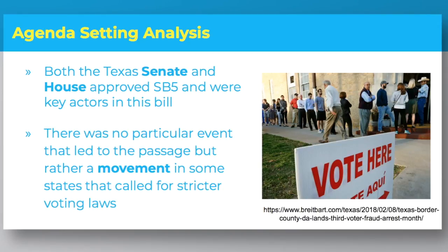Both the Texas Senate and the House approved SB 5, a voter ID overhaul of an original bill passed in 2011. The original bill, SB 14, had many opponents in court and needed to be revised. The updated bill, SB 5, was sponsored by 49 Republican legislators with no Democratic support, with the argument that the bill did not do enough to expand voter access. There was no particular event that led to its passage, but rather a movement in some states calling for stricter voting laws.